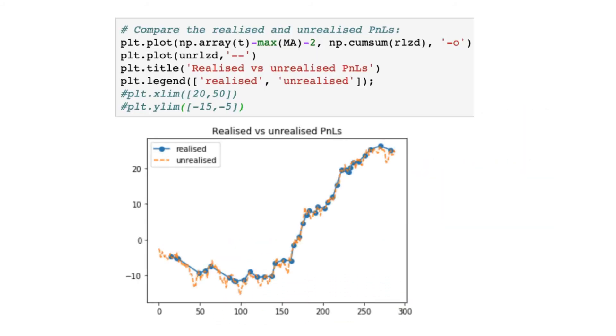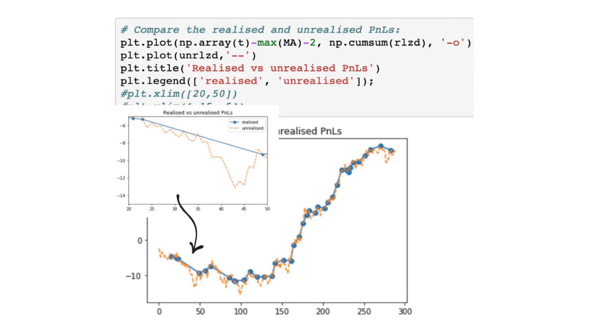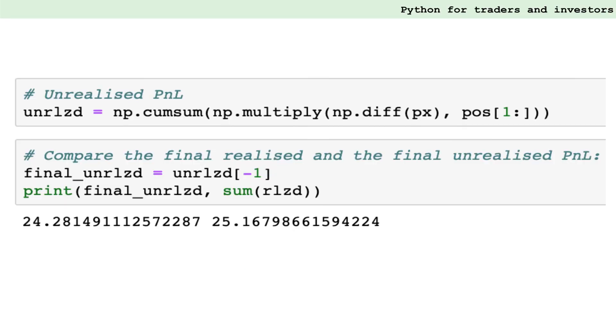Once we've done that, we can plot the results. In some cases, we have significant drawdowns that are not apparent when we only calculate the realized P&L. You might also notice that the final realized and the final unrealized P&L does not agree exactly. This is because our backtest ends in the middle of a trade and there is a residual unrealized profit for that.